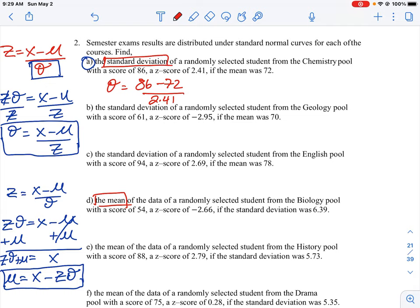All right, so when we plug that into our calculator, you'll get a standard deviation to two decimal spots of 5.81. And that's what you'll end up doing with all the other questions, b and c.